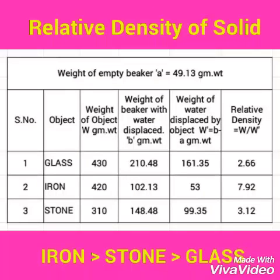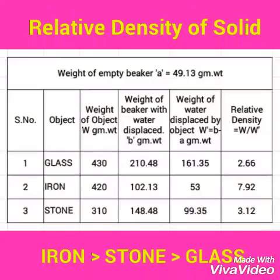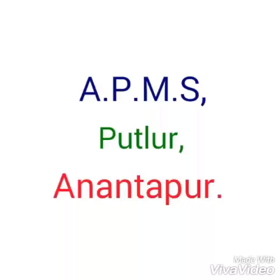All the readings are noted in the table and the relative density of all three objects is calculated. It is observed that glass has higher relative density than iron, which is higher than stone. Thank you.